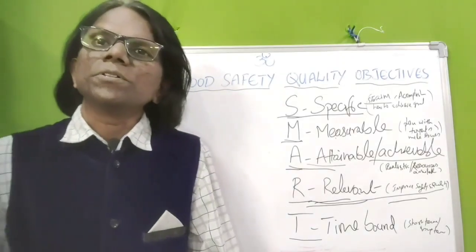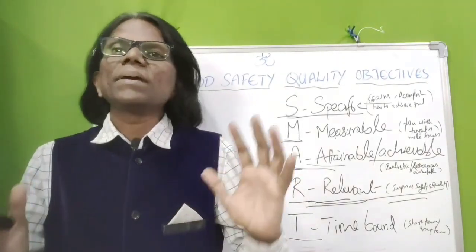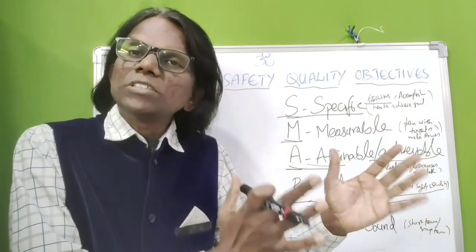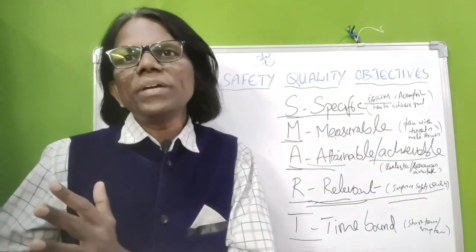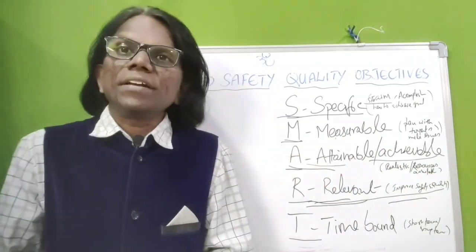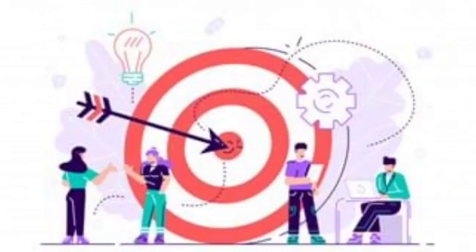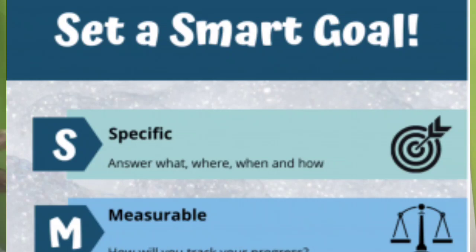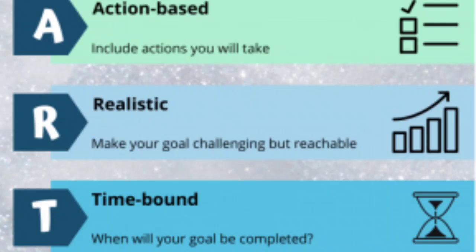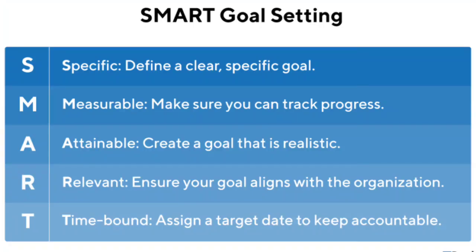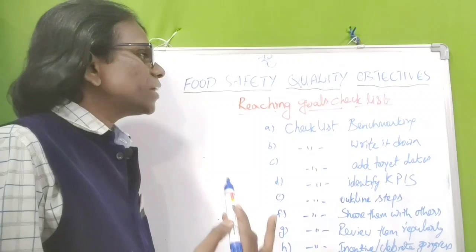The last element is Time Bound. We have to define clear time frames and measures of success — either short-term goals of three or six months, or long-term goals of one year. Your goal should be grounded within a timeframe; with no timeframe there is no sense of urgency. Putting an endpoint on your goal gives you a clear target to work towards.